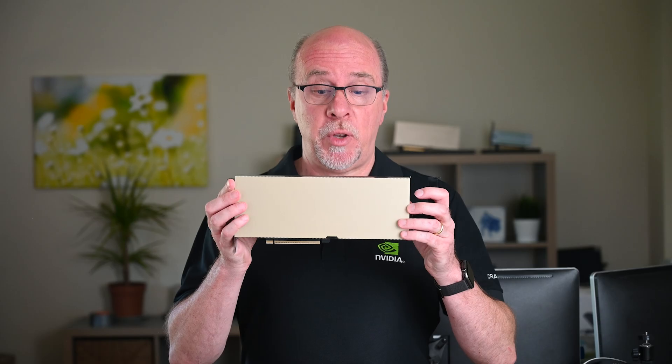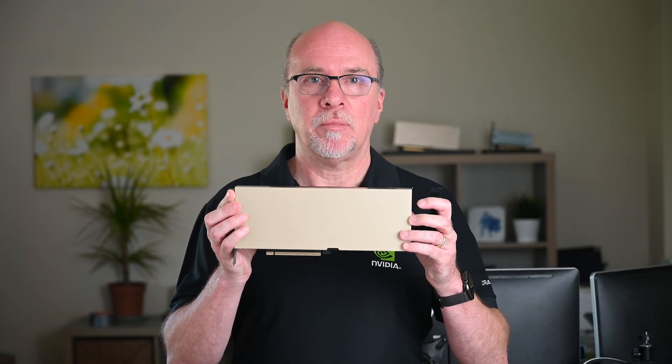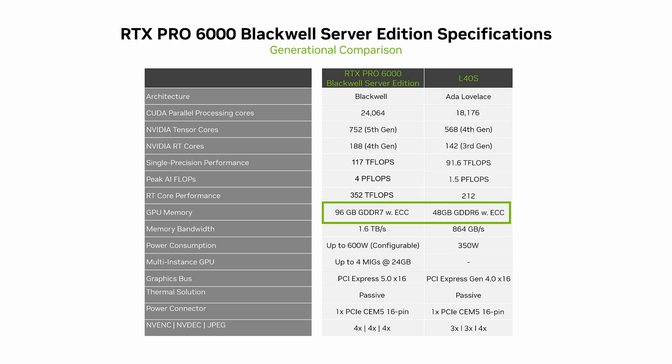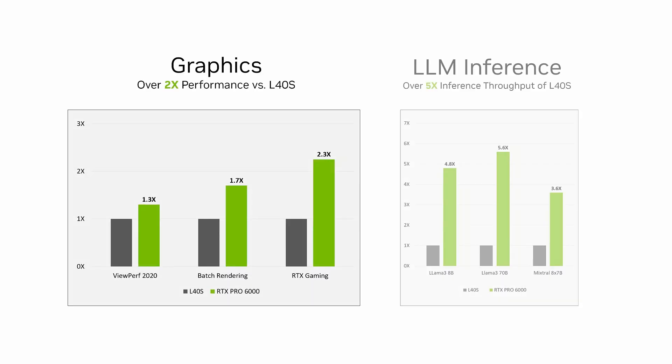Welcome to this video on the RTX Pro 6000 Blackwell Server Edition. The RTX Pro 6000 Blackwell is a universal GPU that caters for both AI and graphics workloads. It has 96GB of GPU memory, a third more compute cores than its predecessor, the L40s, and in most cases it's anywhere between two to five times faster than the L40s, depending on the workload.